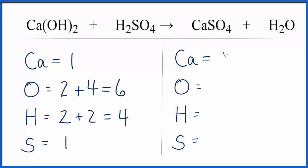Over on the product side, we have one calcium, and then for oxygens, we have the four here, plus this one, that gives us five. Hydrogens, we have two, and then the sulfur, we just have one.